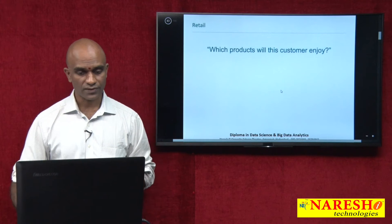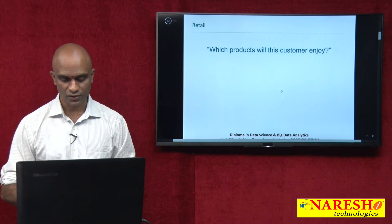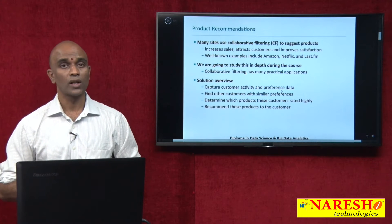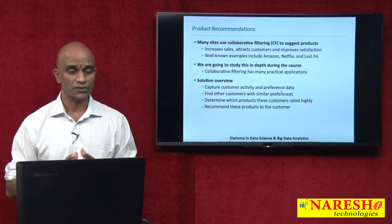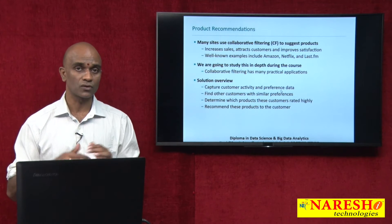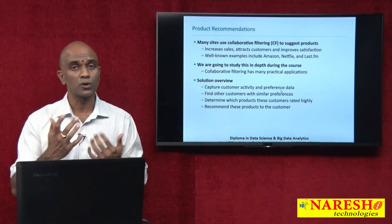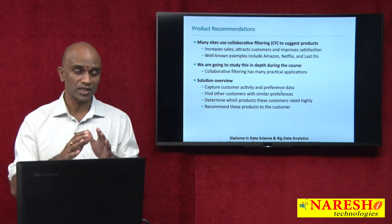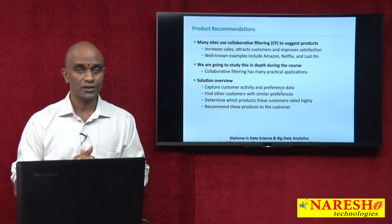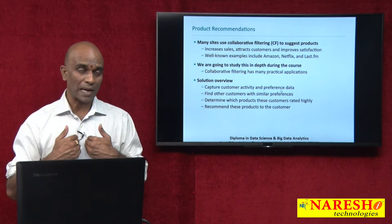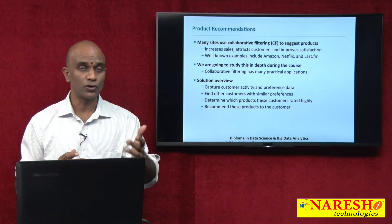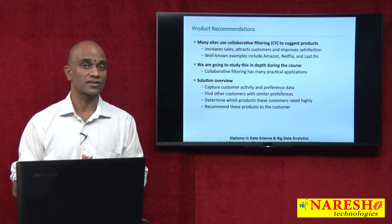Moving on to retail products — which products will this customer enjoy? There is something called collaborative filtering which suggests products. When we get onto Amazon or Netflix, and we search for a book on Data Science or Hadoop, immediately there are a bunch of recommendations. That is an example of a data product, and the recommendations are based on what others have already clicked, viewed, and purchased.